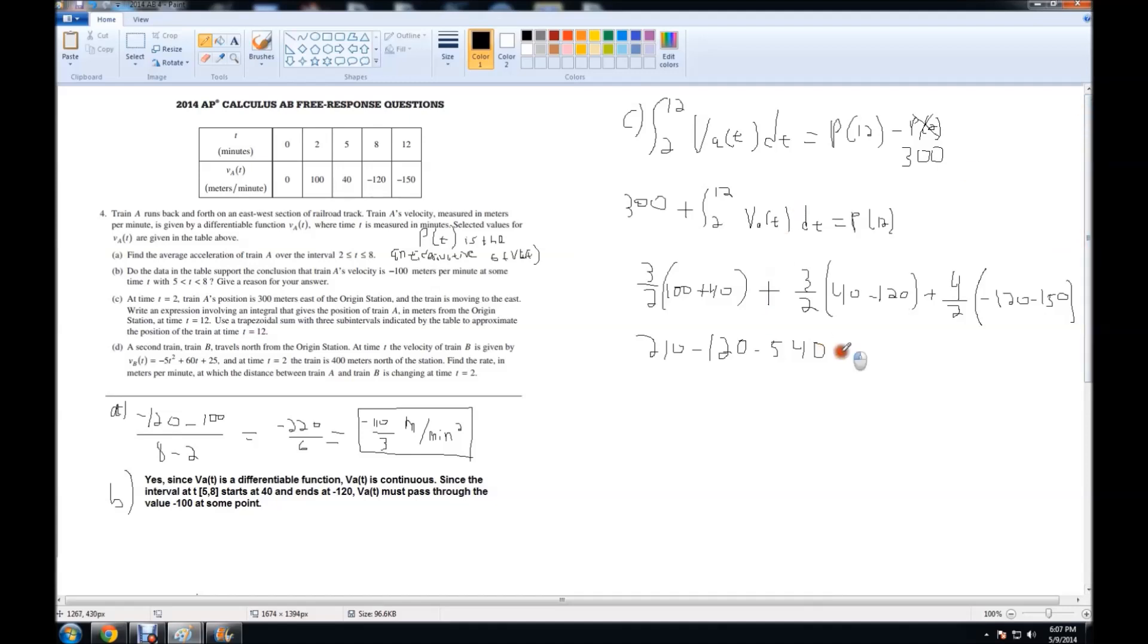Adding all this up, you end up getting a total of negative 150. That is the position of the train at time T equals 12. You can also write this as 150 meters west of the origin station, or negative 150 meters.